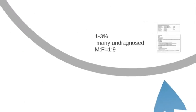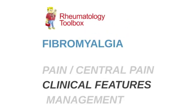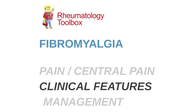Fibromyalgia affects between one and three percent of the population. For many patients, the disease remains undiagnosed or is diagnosed very late. It is predominantly a female disease with a male-to-female ratio of one to nine. It's important that this disease, which can go unrecognized for a long time, is recognized early so that the patient sees all their symptoms in the context of one disease rather than multiple symptoms across different systems appearing simultaneously. In the next part of the presentation, I'll discuss clinical features, and in the third part, management.